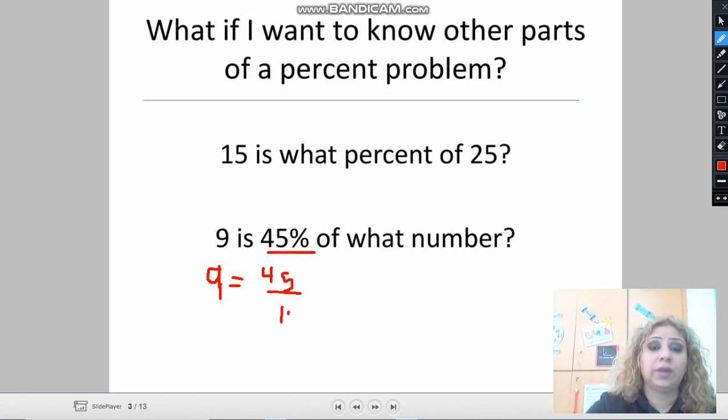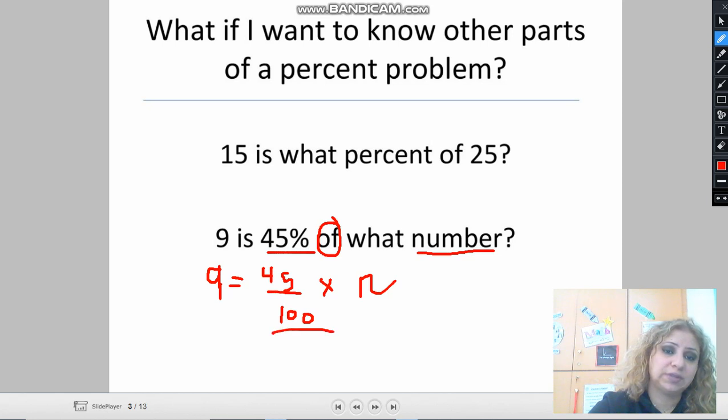'Of' what number should be changed to multiplication. Multiply what number? This is the missing item here or the missing term. I can give it a variable which is n. As you'll see here, I can solve now my equation by dividing both sides by 45 over 100, because the inverse operation of multiplication is division. So we have to divide both sides by 45 out of a hundred.